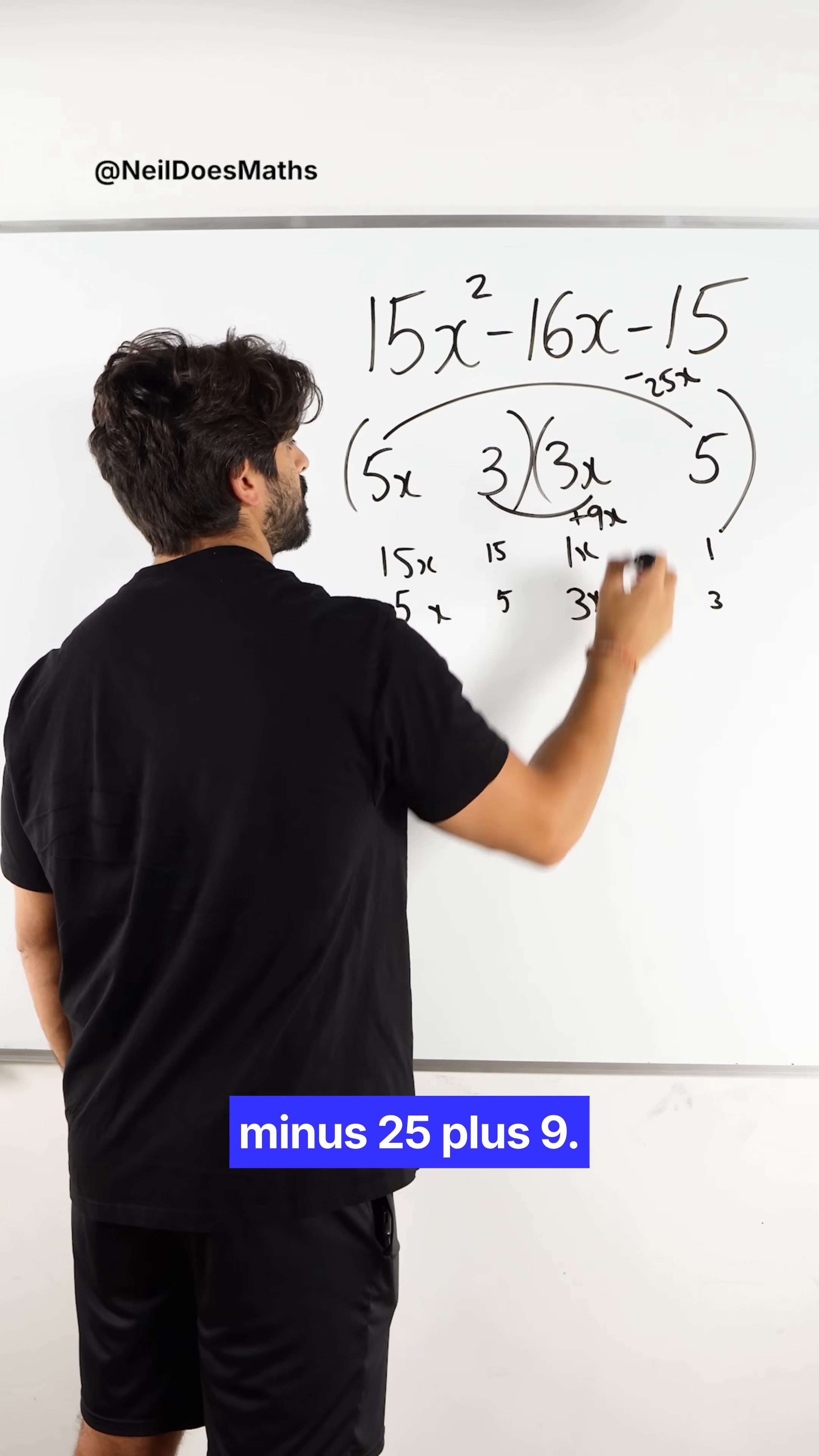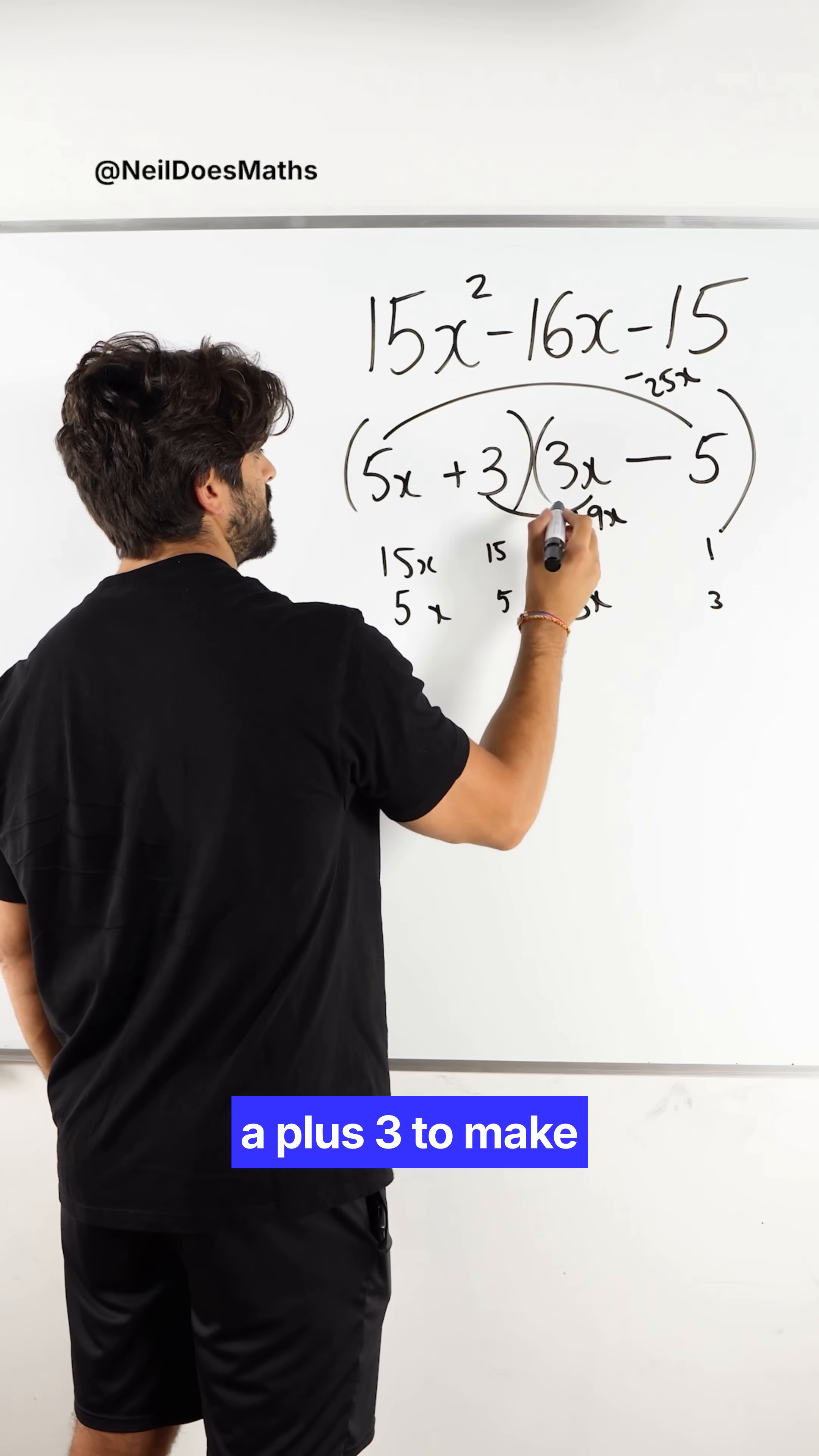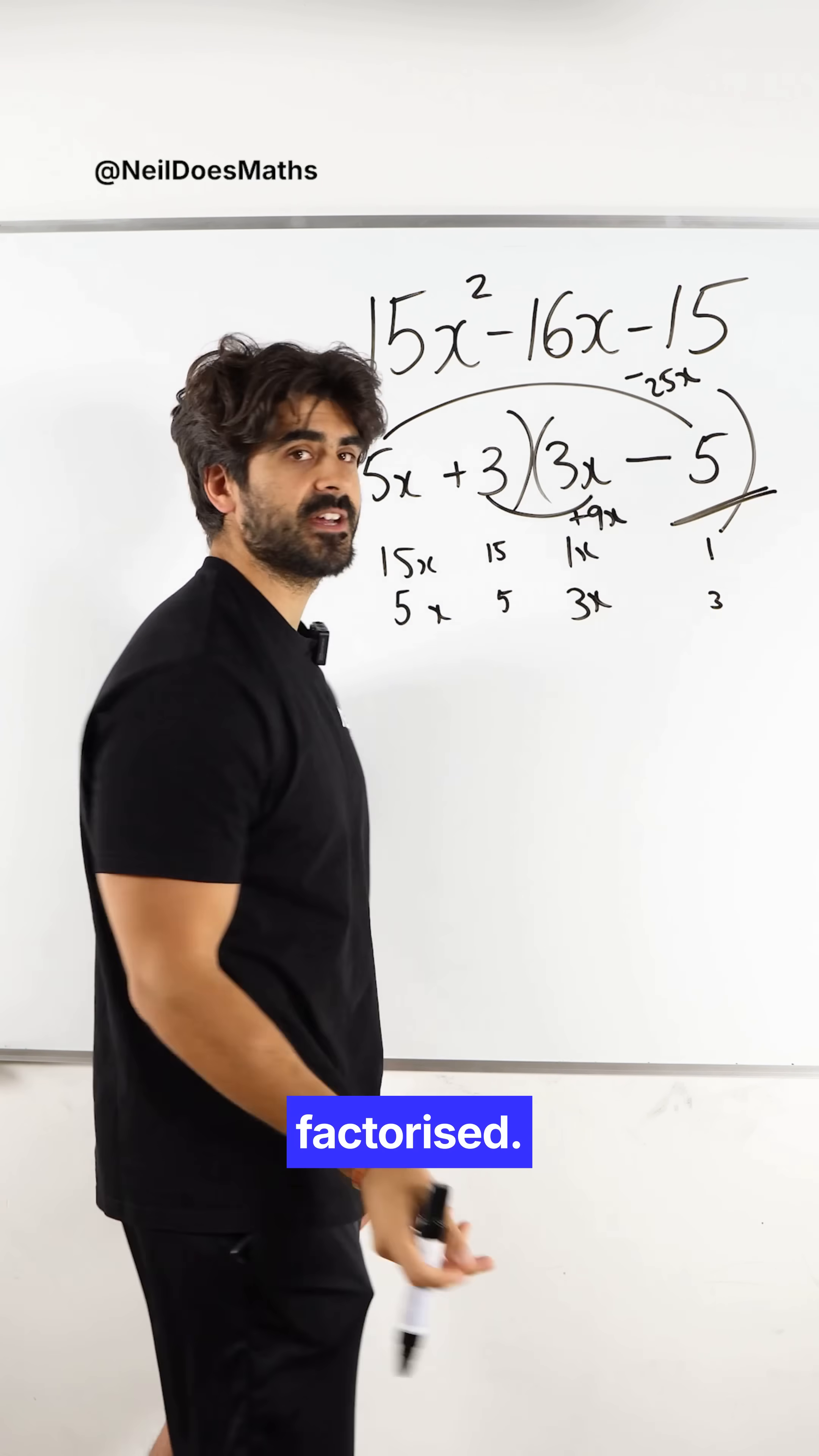Well, if you have minus 25 plus 9, there we go. So we need a minus 5 and then we need a plus 3 to make that plus 9. And that is factorized.